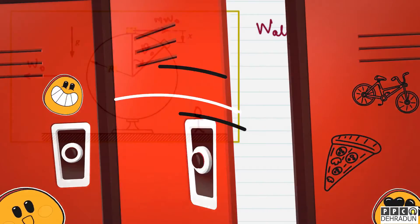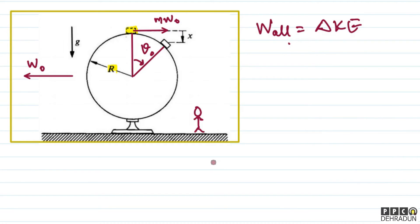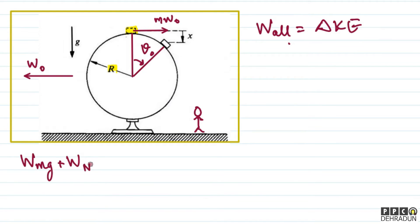So in this problem we first want to use work-energy theorem: work done by all the forces equals change in kinetic energy. The forces acting on the block are: normal reaction, mg, and the pseudo force (since we are working in an accelerated frame). So: work done by mg, plus work done by normal, plus work done by pseudo force equals change in kinetic energy.